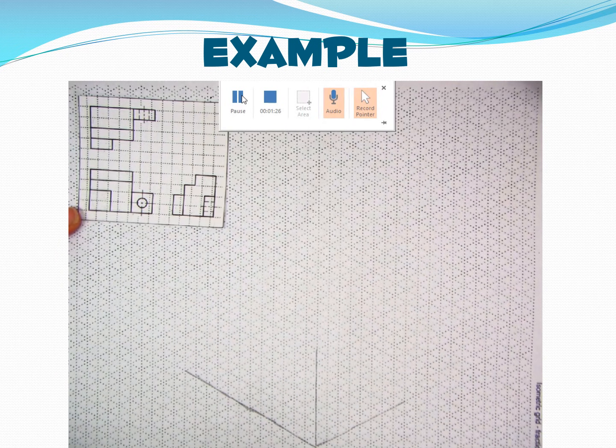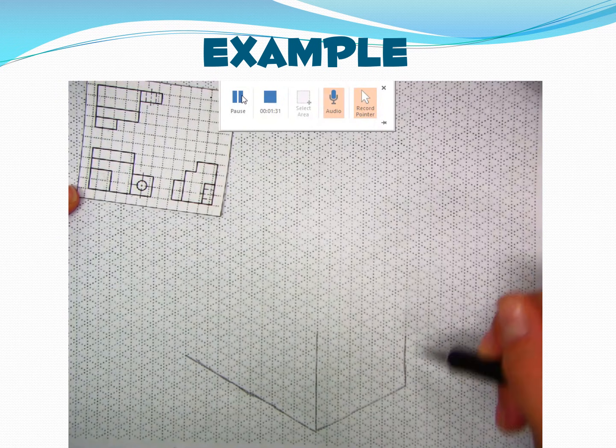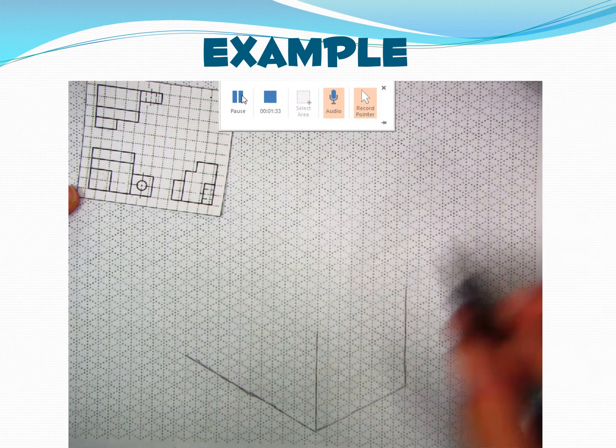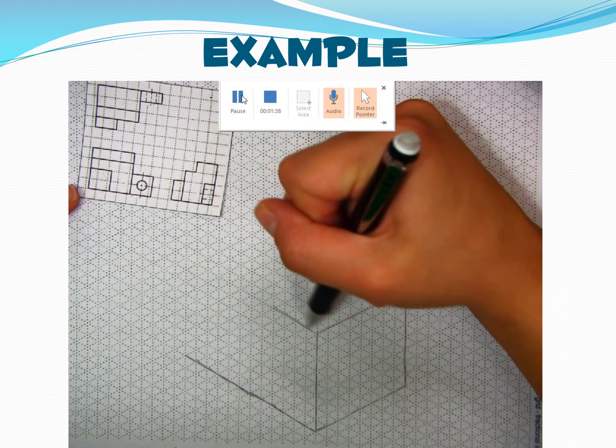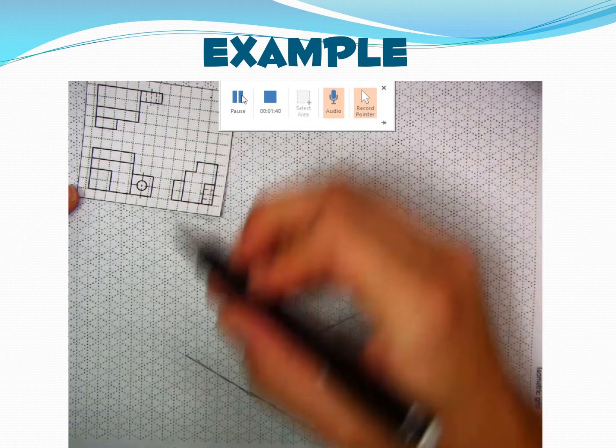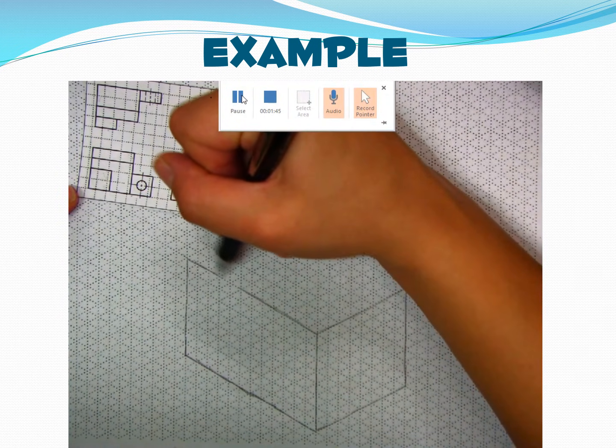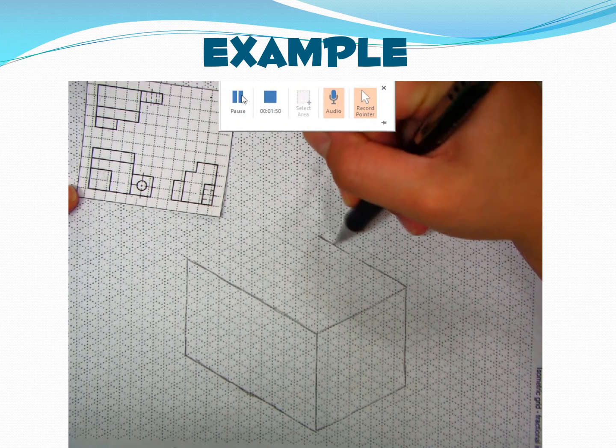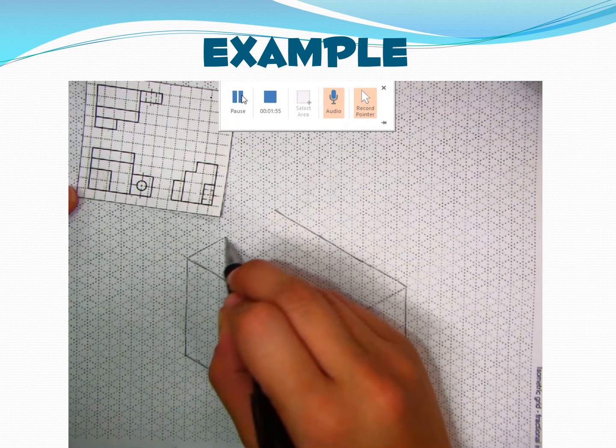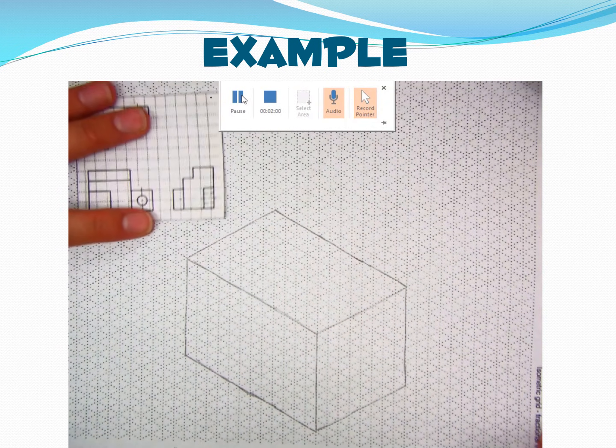Once I get my three principal axes in there like I have here, I will finish off my block, making a nice rectangular prism.